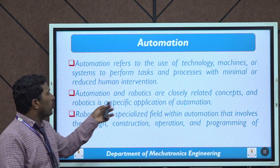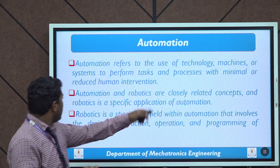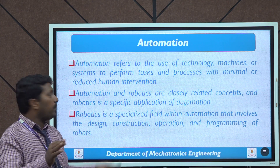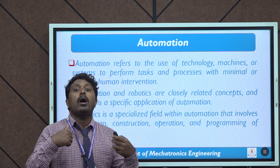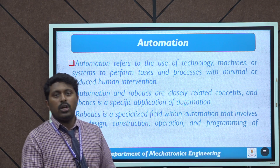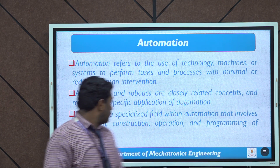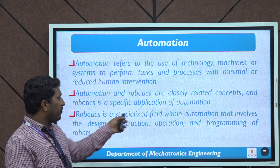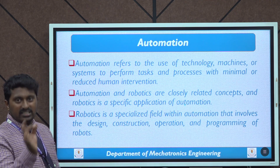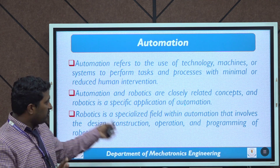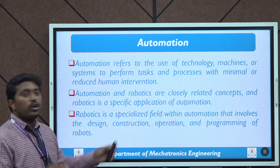Automation and robotics are closely related concepts, and robotics is a specific application of automation. Automation is a very broad field. Robotics is one sub-category within automation. Robotics is a specific field within automation that involves the design, construction, operation, and programming of robots.